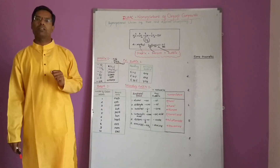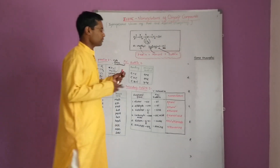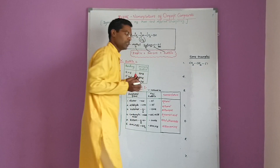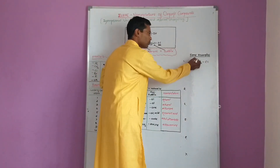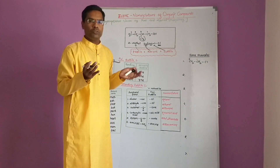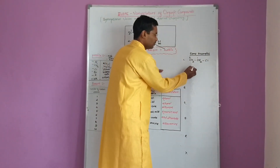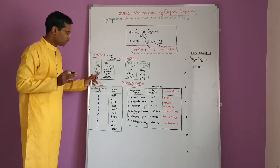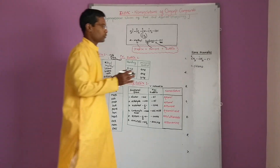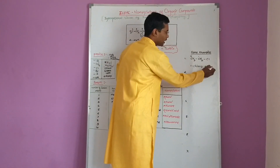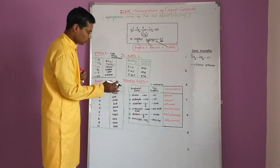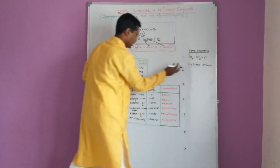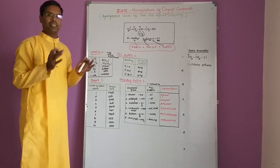Now take examples of IUPAC nomenclature. First example: CH3-CH2-Cl. There are two carbon atoms: carbon 1 and carbon 2. Chlorine, bromine, and iodine are always taken as the prefix, so this is 1-chloro or simply chloro. The name is 1-chloroethane. Why ethane? Because there are two carbon atoms — two carbon atoms represents 'eth' — and ANE represents that there are only single bonds.